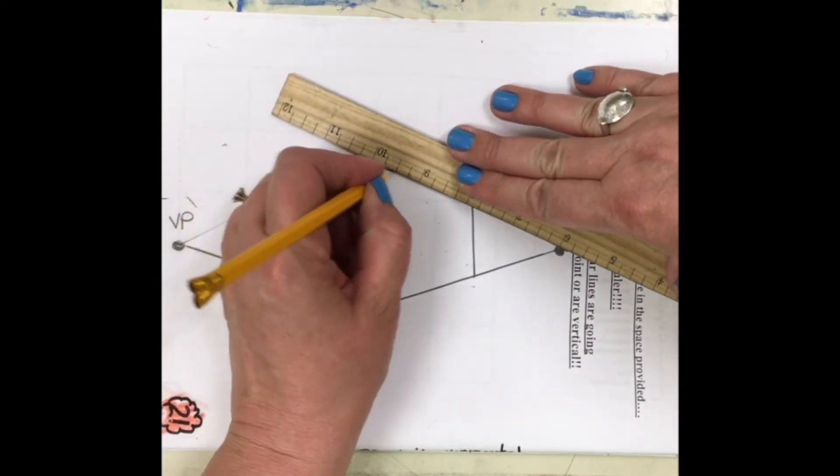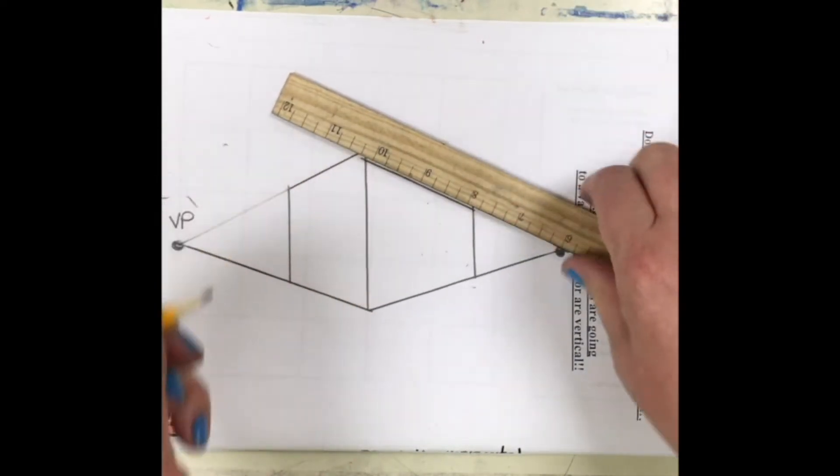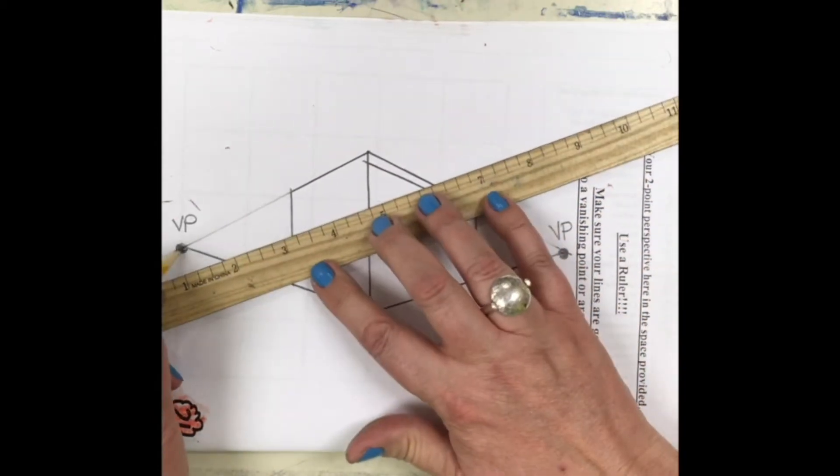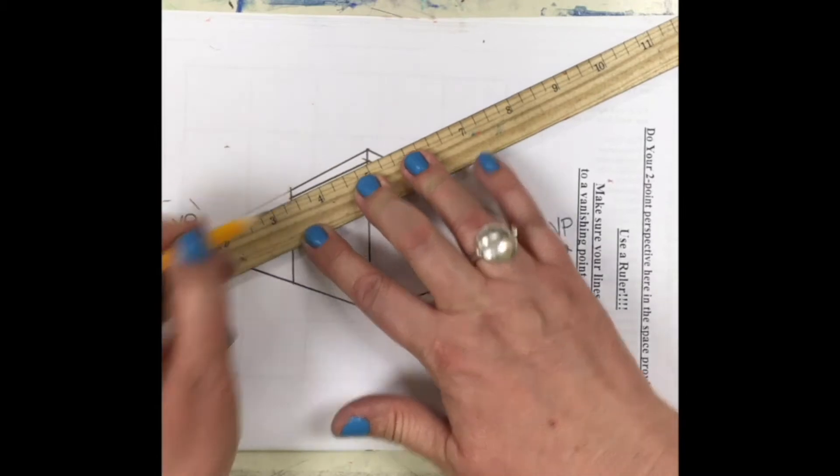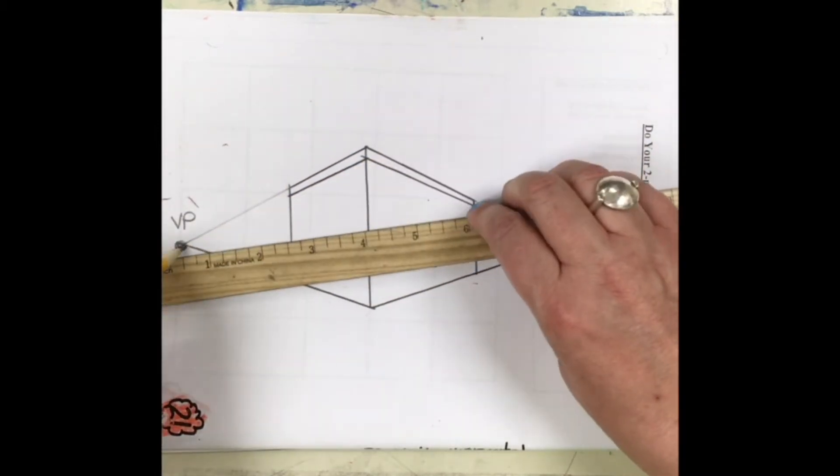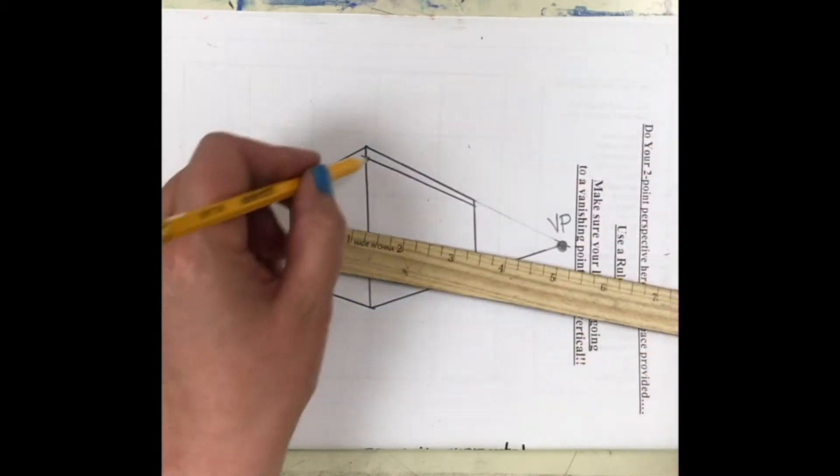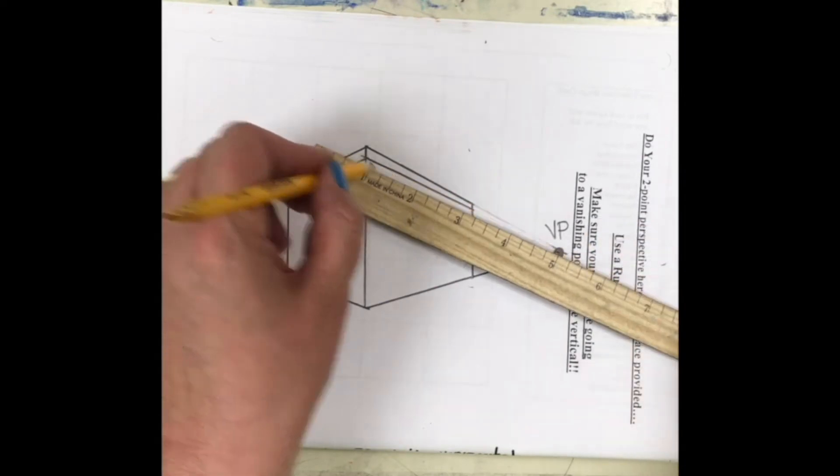And then I'm gonna start to put some detail on my building. So the first thing is gonna be a gutter line. A gutter line is a line that goes around a building that helps the water to shed off of it. So I line those back up with the vanishing point, lined it up with the vanishing point, drew my line.